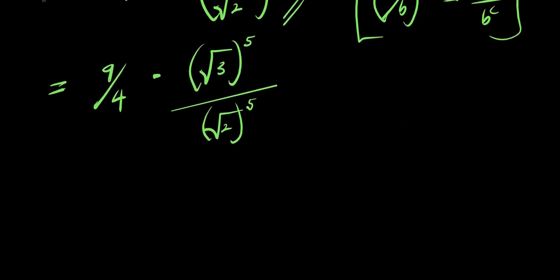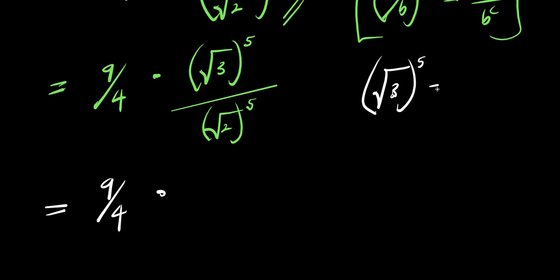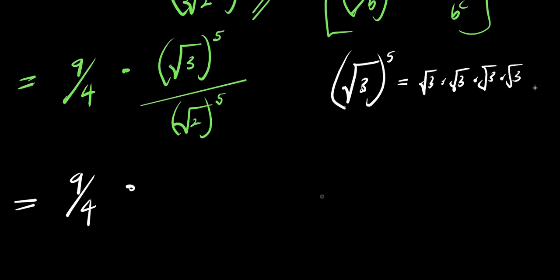So from here, we are going to find the value of root 3 to the power of 5. We have 9 divided by 4 times root 3 to the 5th power. Root 3 to the 5 equals root 3 times root 3 times root 3 times root 3 times root 3. Root 3 times root 3 is root 9, and root 9 is 3. Then 3 times root 3 times root 3 gives 3 times root 9, which is 3 times 3 equals 9, times root 3. So root 3 to the 5th power equals 9 root 3.